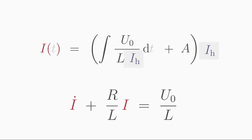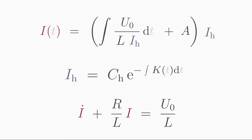First, we need to determine the homogeneous solution IH. We can quickly calculate this using the solution formula for the homogeneous version of the differential equation that you learned before. The coefficient K in front of the sought function IH corresponds to R over L and is also time-independent in this case.